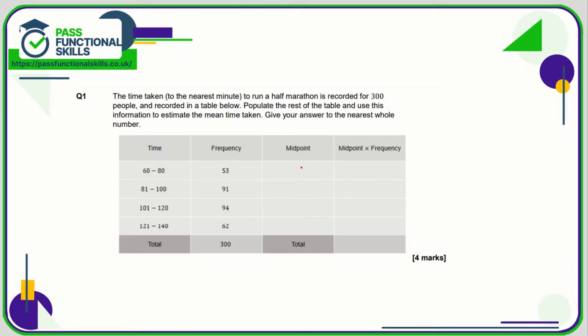What is midway between 60 and 80? Well, that's easy, it's 70. What's midway between 81 and 100? Well, that's much harder. We're going to add the two numbers together and then divide the total by 2. So 181 divided by 2 is 90.5.